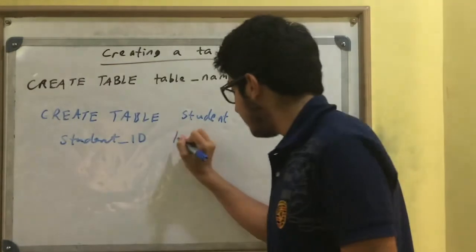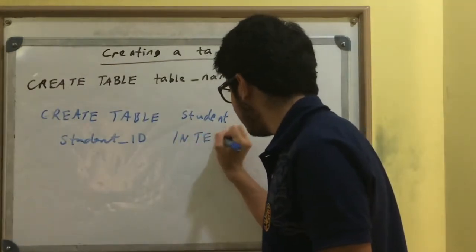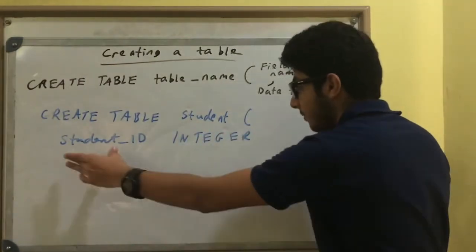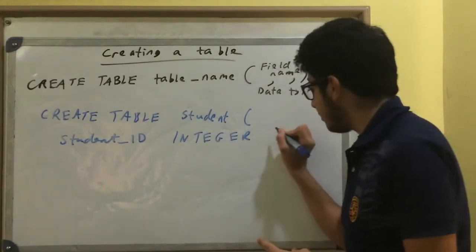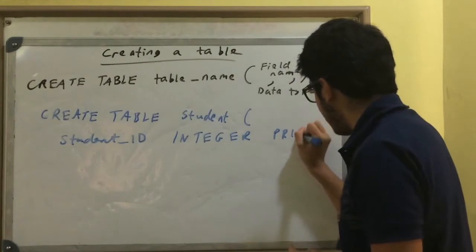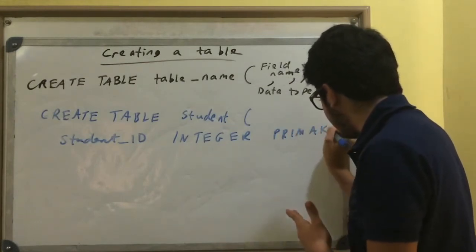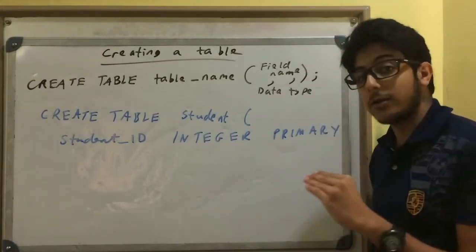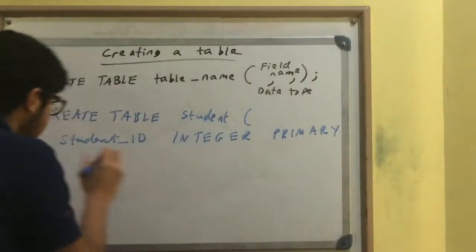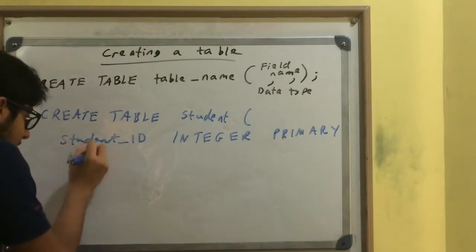But first of all, I want it to be an integer data type. So the name of the field and then the data type. I want this to be a primary key, and a primary key is just a field which has a unique value to that record. So primary key - that's how I make it a primary key.